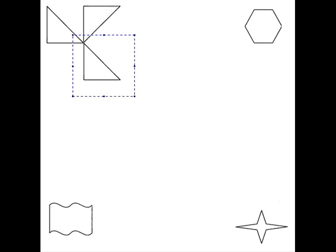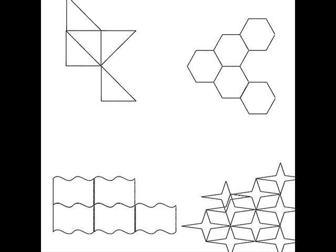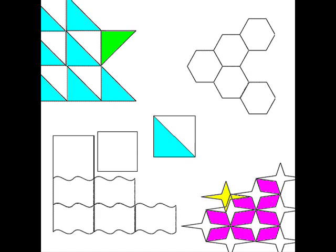This is how Escher made a lot of his tessellations and drawings. You can cut a piece out of one side and glue it onto the other side through the line of symmetry, and you'll find that the pieces will still tile the plane.